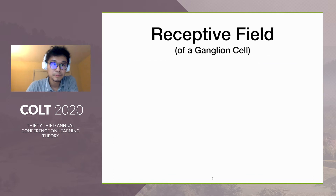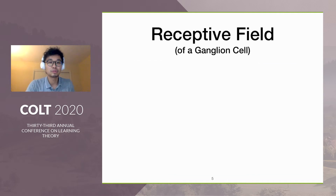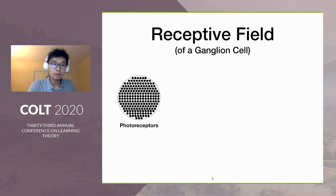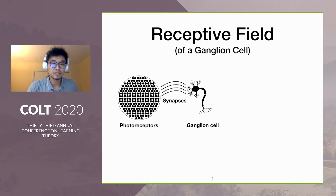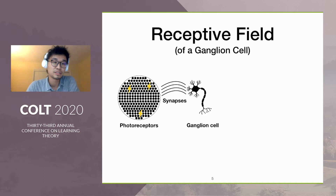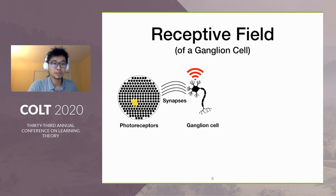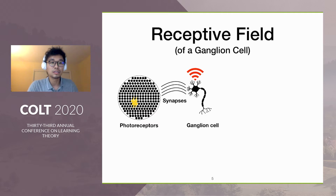Let's start from the computational task. Before that, we need some knowledge from biology, which is the receptive field. Recall that the first layer of the retina is the photoreceptor cells, and the last layer are ganglion cells, with some synapses connecting them. Receptive field is a collection of photoreceptors that correspond to the activity pattern of ganglion cells. When light shines on photoreceptors and the ganglion cells got excited, those photoreceptors are called the excitatory receptive field of this ganglion cell.